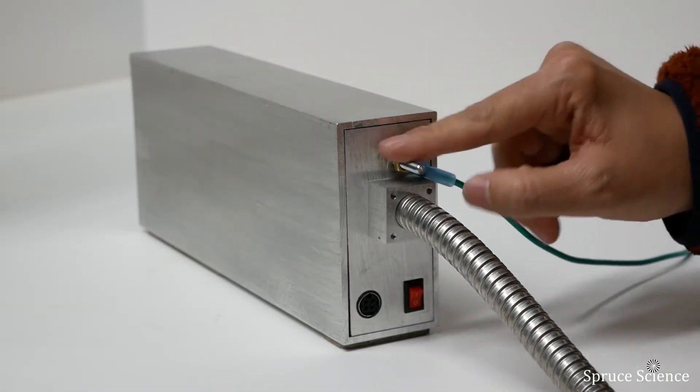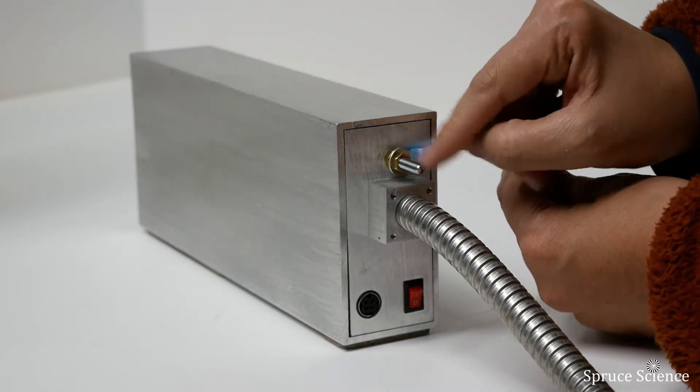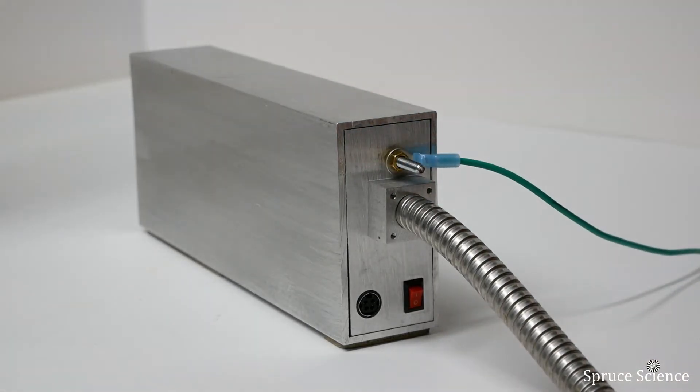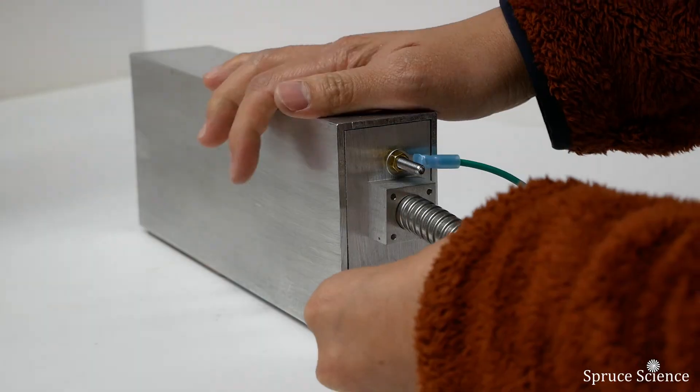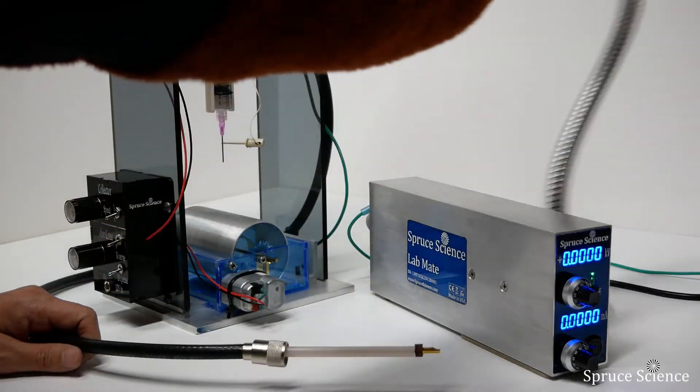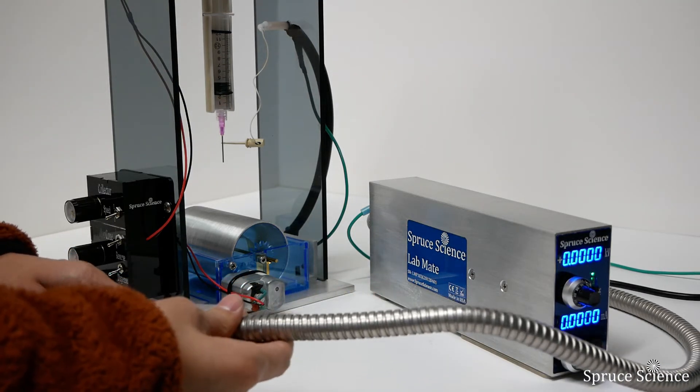Proper grounding is very important. Make a secure ground connection between the high voltage power supply and earth ground. Make the 24 volt connection. Connect the high voltage power supply to the drum tower.